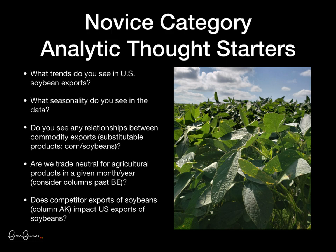We wanted to include a few thought starters that would be of high value to farmers as a place to get started, and we expect that you'll expand beyond this. Number one: what trends do you see in U.S. soybean exports? Number two: what seasonality do you see in the data? Number three: are there any relationships between commodity exports — think about substitutable products. Four: are we trade neutral for agricultural products in a given month or year, and does that impact the soybean market? And number five: does competitor exports of soybeans impact U.S. exports of soybeans?